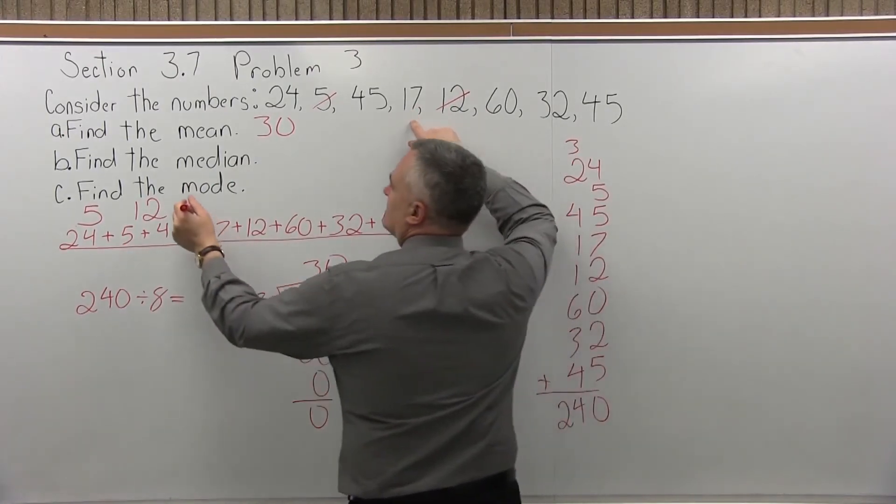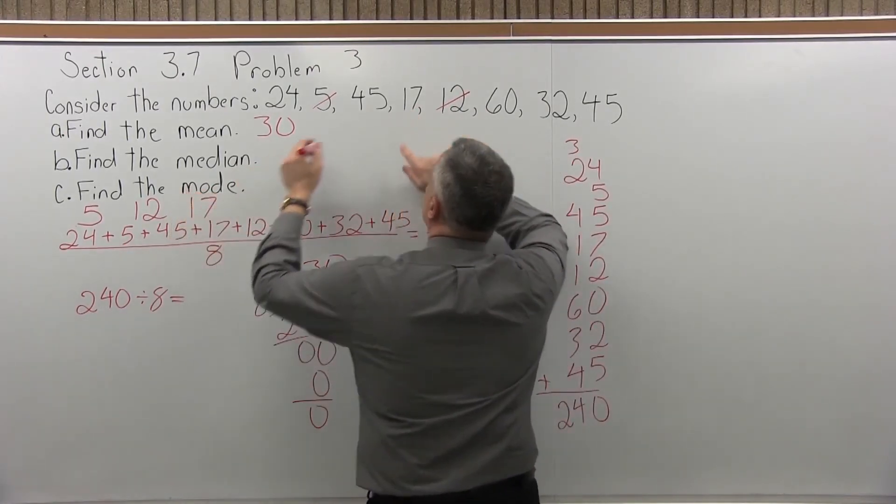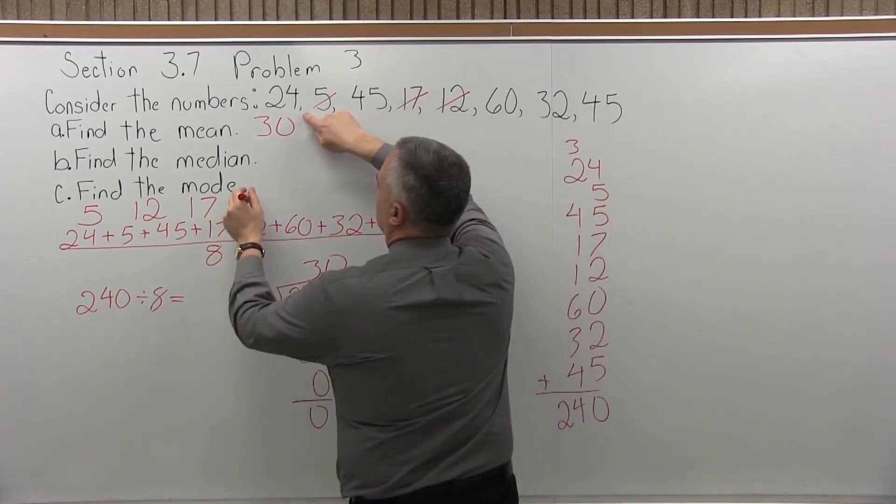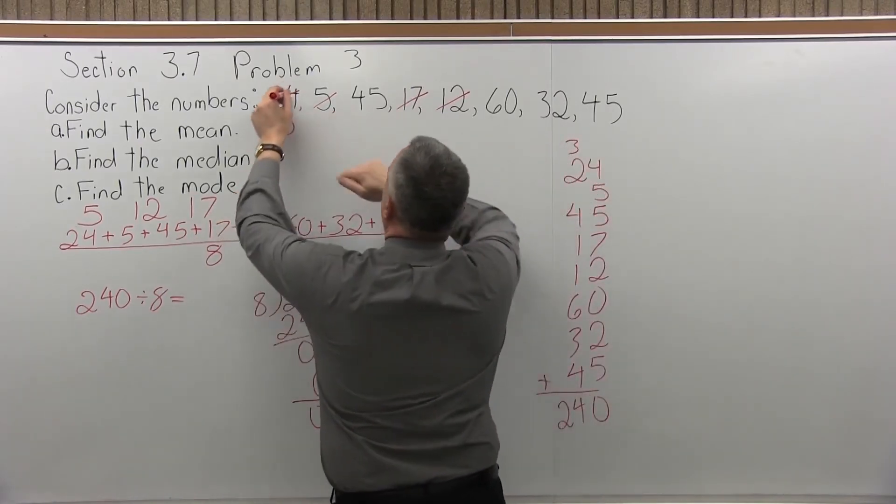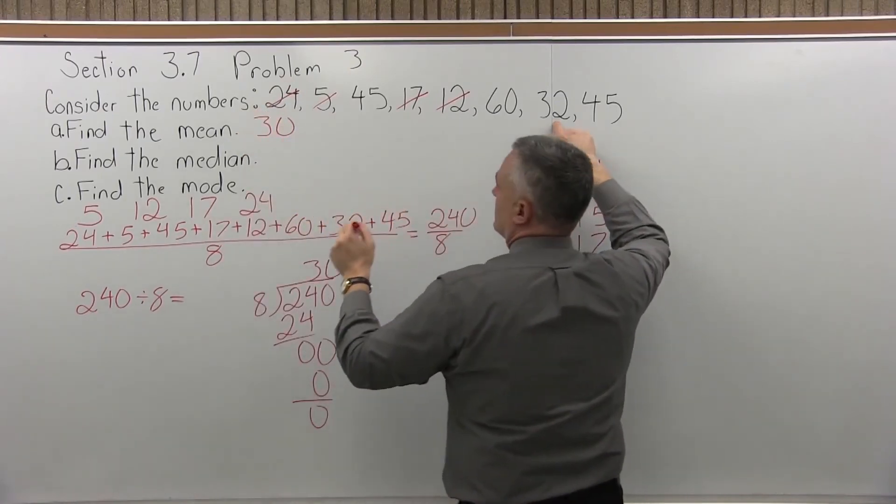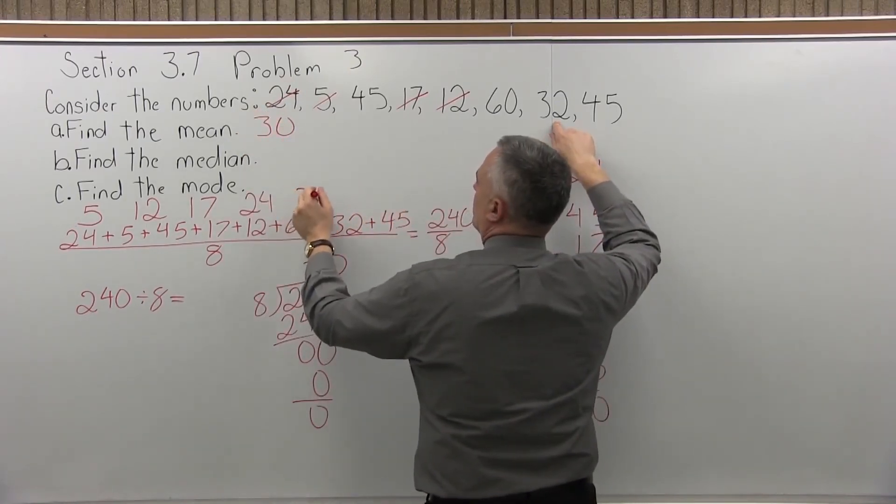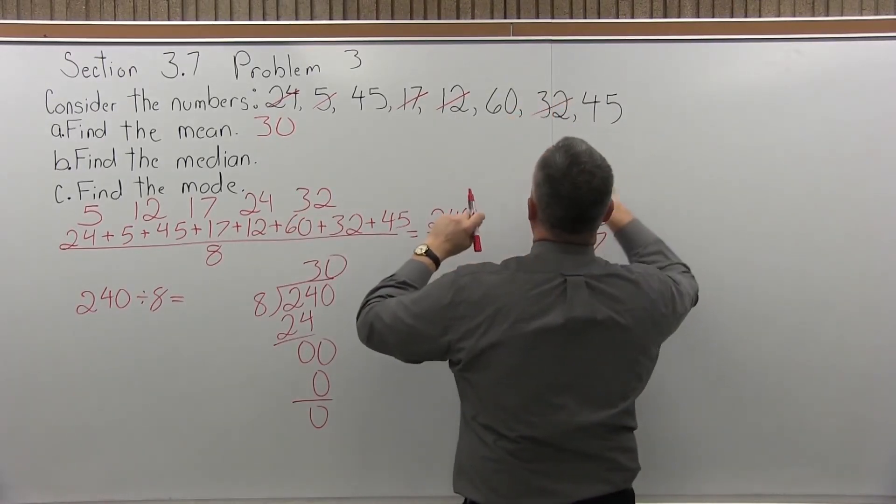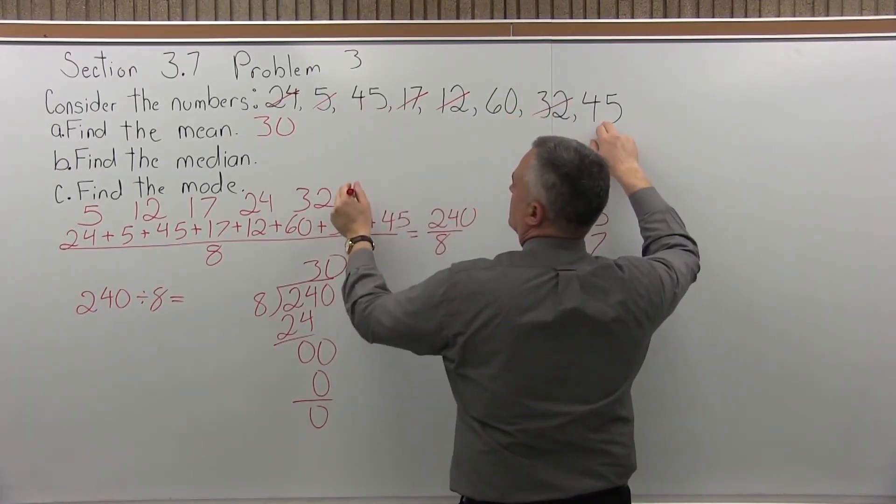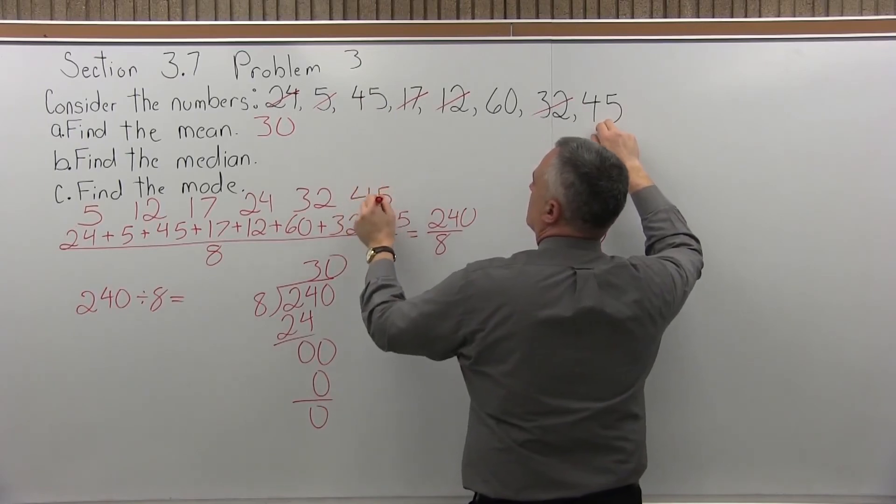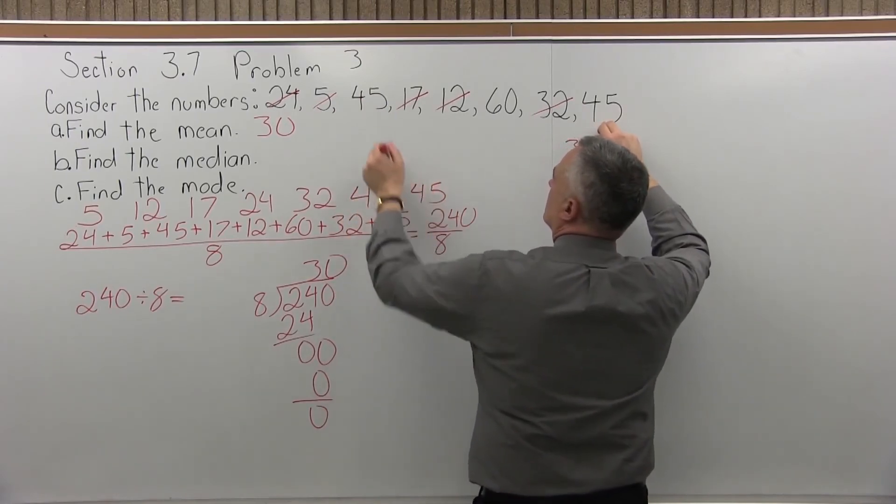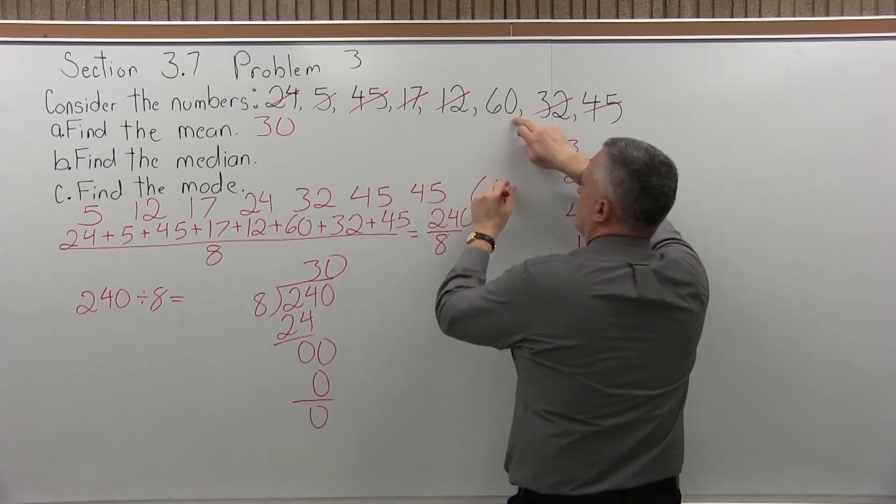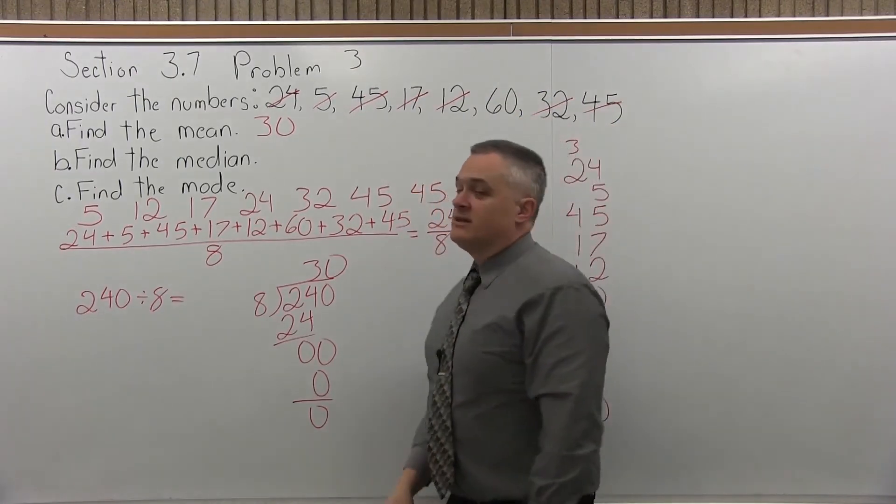And 17 is the only other one in the teens. See if we have anything in the 20s, 24. In the 30s, we have 32. Everything else in the 30s, 45 shows up twice. And 60 is left. So that's the list in order.